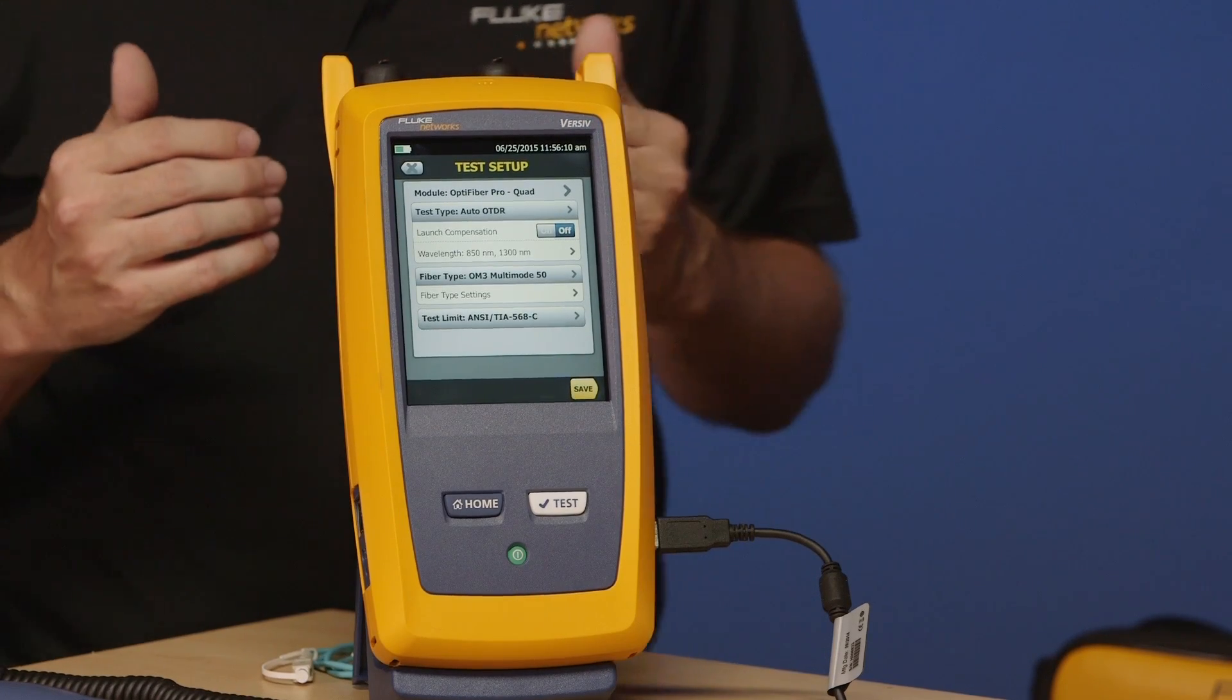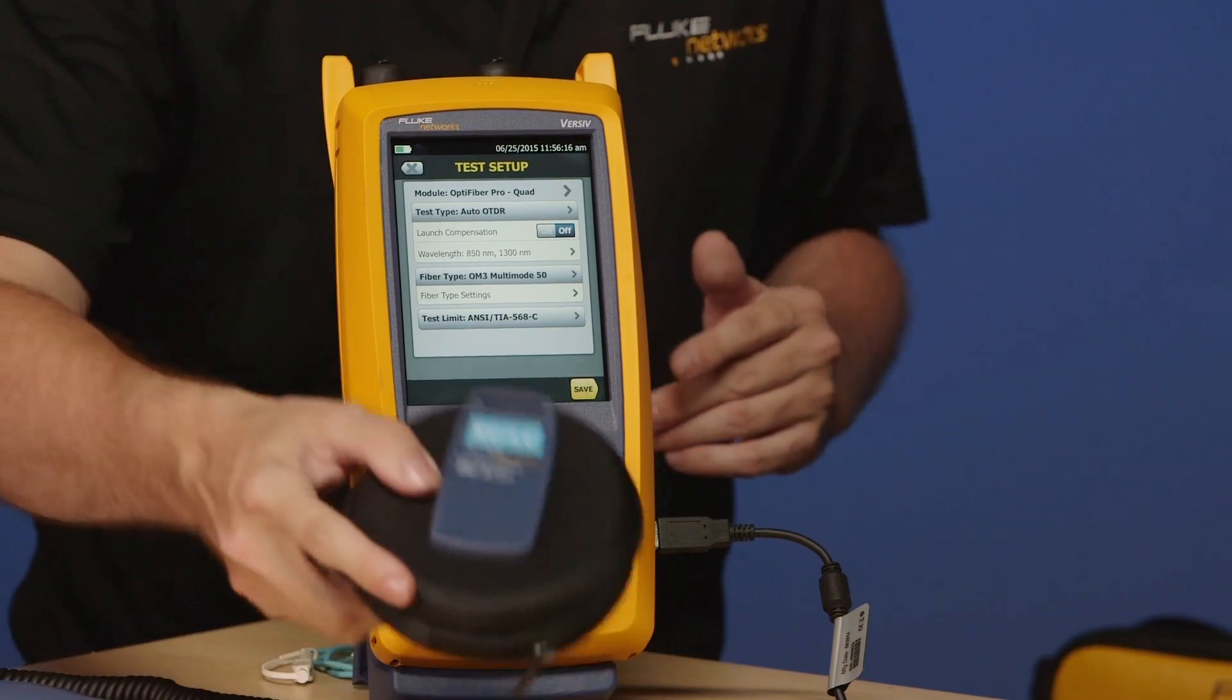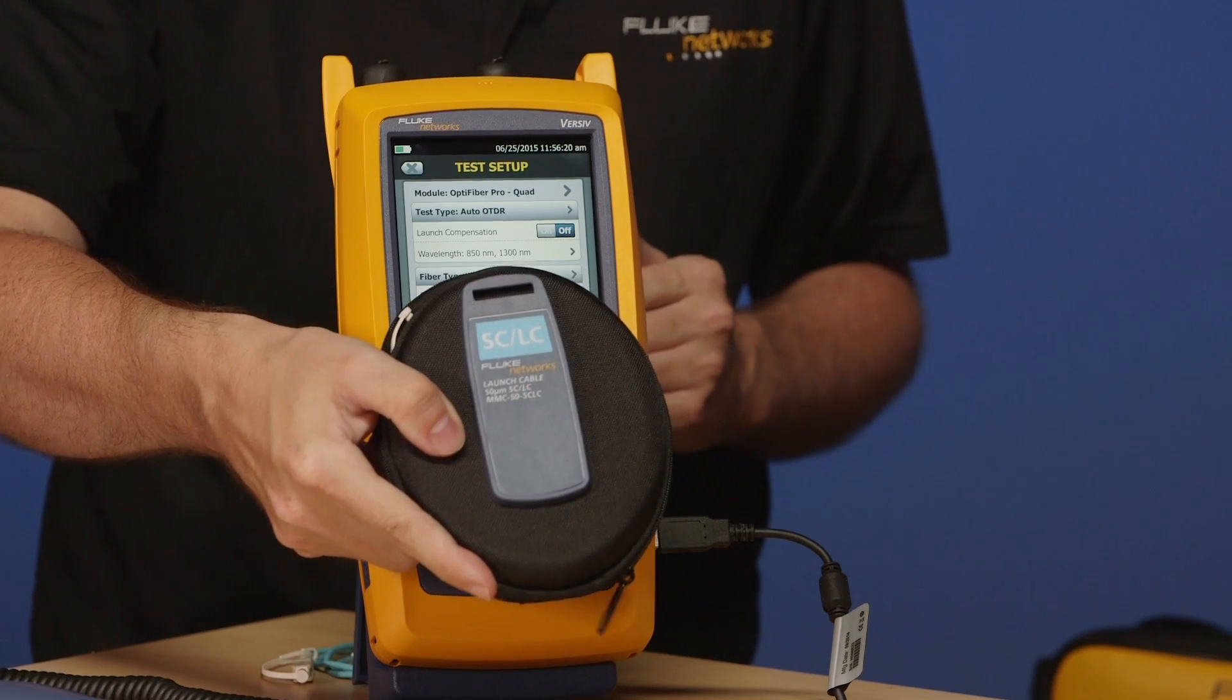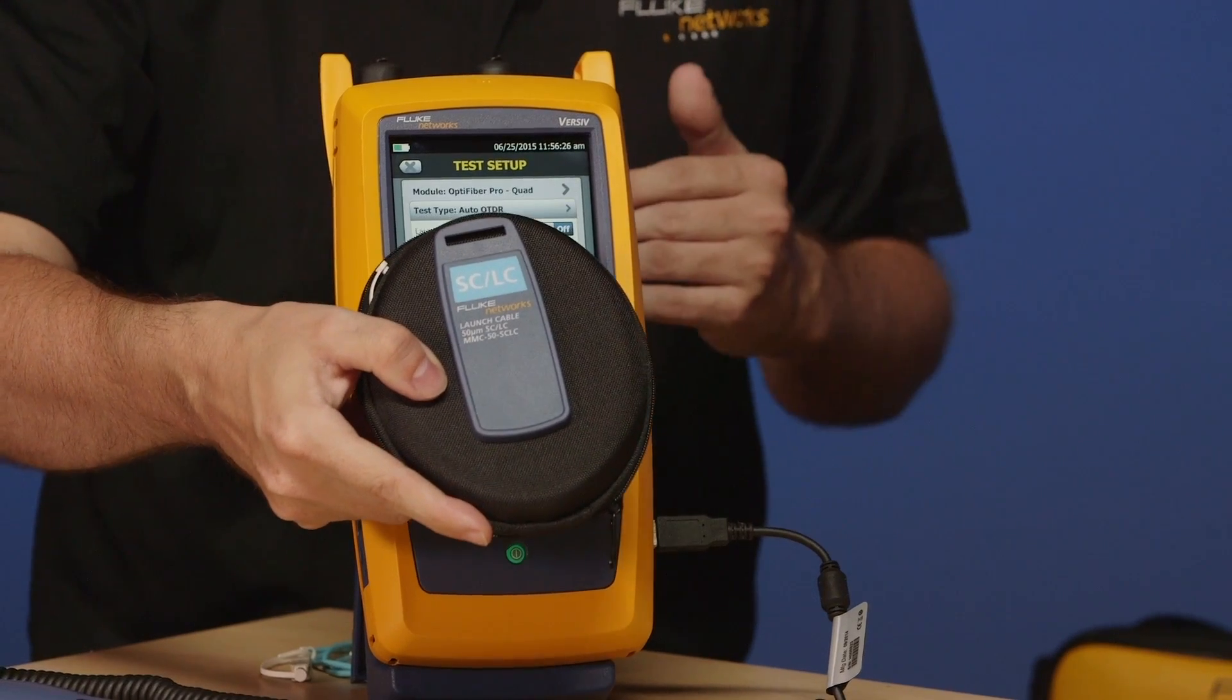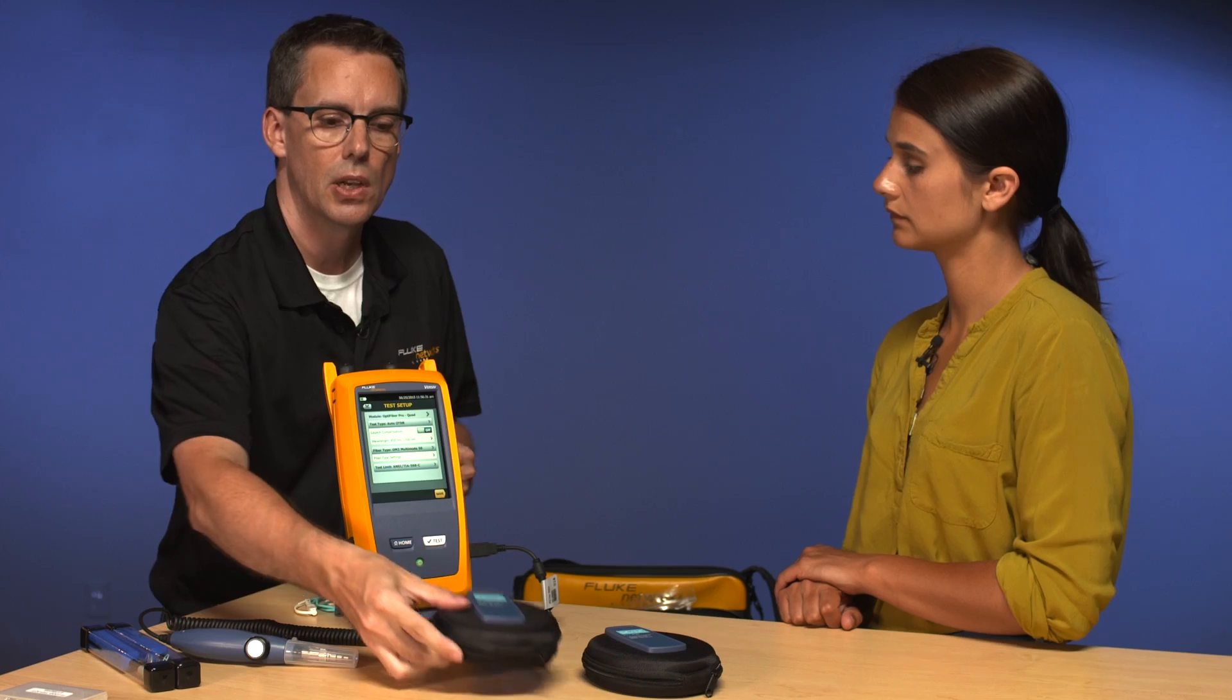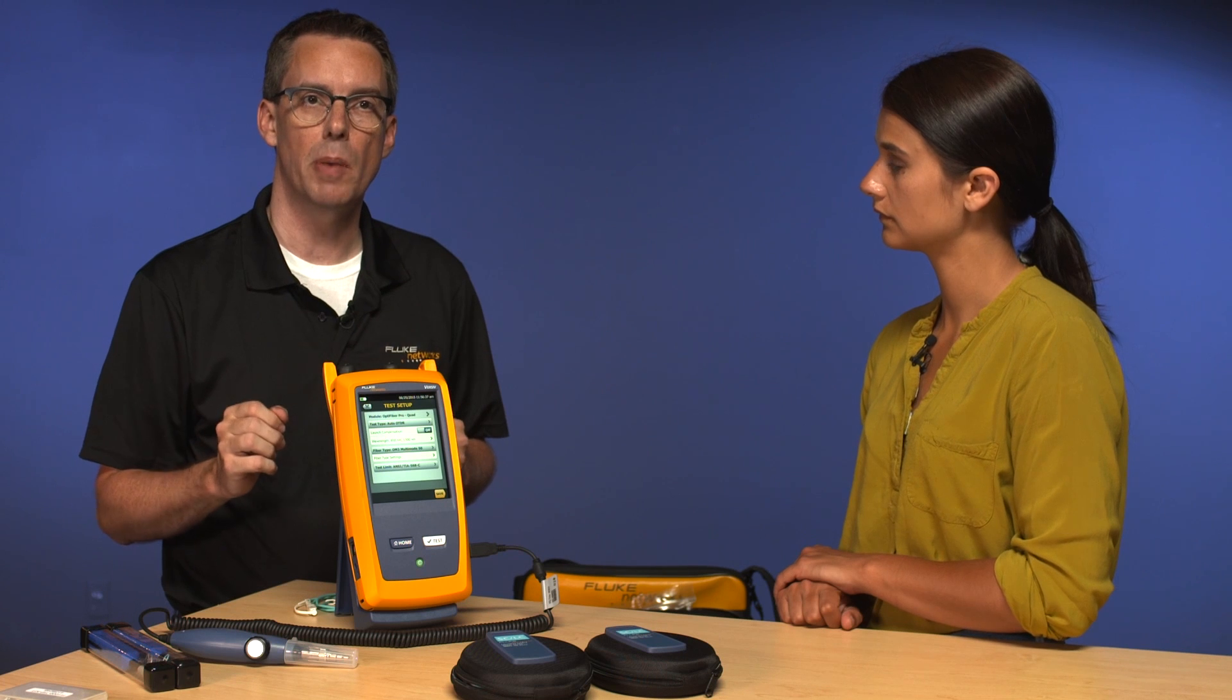And next thing down on my list here is the Launch Compensation. Now, whenever you do an OTDR measurement, you are going to be using a launch fiber. And it doesn't look like it. These launch packs contain about 105 meters of fiber. We have to connect that into the link, otherwise we're not going to see that first connection. Of course, we don't want this to be part of our measurement. So, what we'll do here in a moment is we'll actually remove that launch fiber from our measurement.